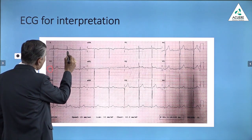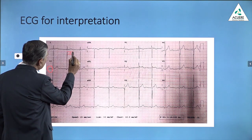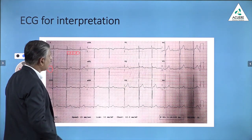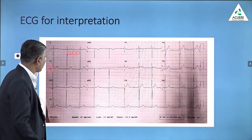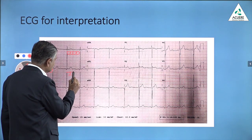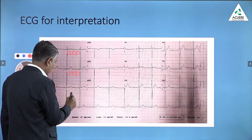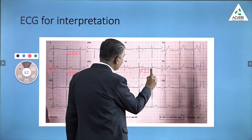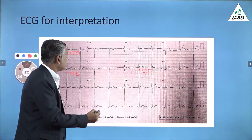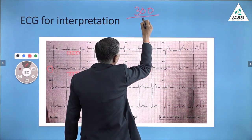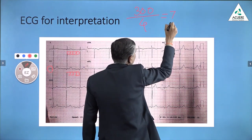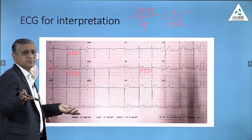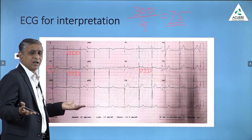The second thing is that you have to count the number of large squares in between the two R waves — that is what we call the R-R interval. It is around 4. Then our equation is 300 divided by 4, which is equal to 75. And that's why the heart rate of this ECG is a little more than 75. You can call it a normal heart rate.